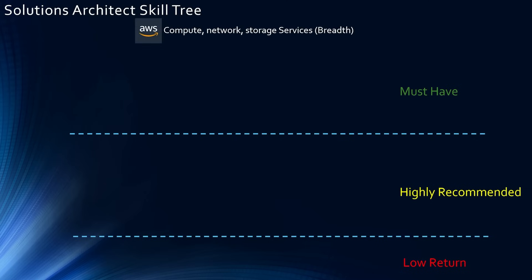First and foremost, you need to have a general idea on the compute, network, and storage services on the cloud — I'm showing the AWS logo because I'm a little biased, but the same is true whether you're going for AWS, Azure, or GCP. I specifically put the word 'breadth' here because it is impossible to learn all different compute, network, and storage services in great depth. But as a solutions architect, you need to have some basic idea. For example, if the current on-prem project is running some object-based storage, you need to know the equivalent cloud service — for example, AWS S3.